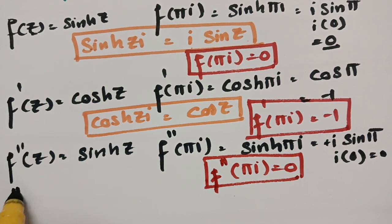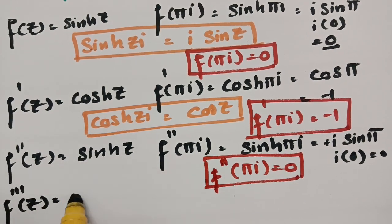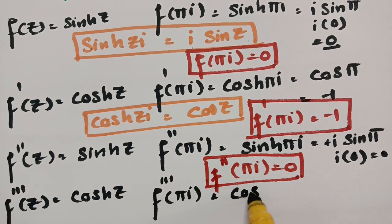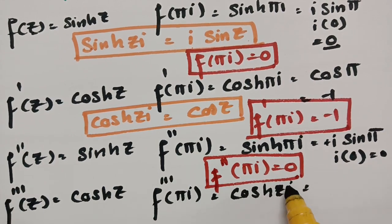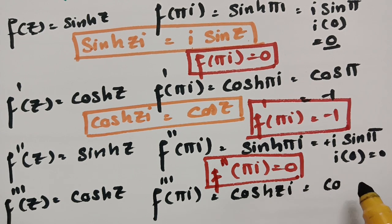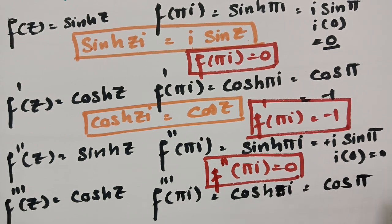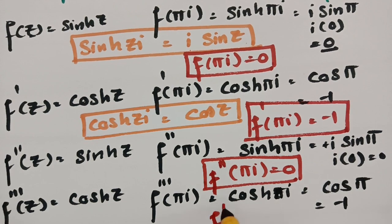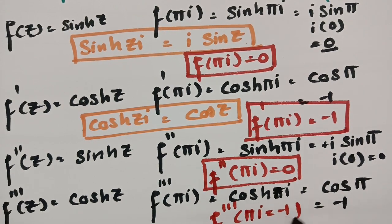For the third derivative, f'''(z) = cosh(z), so f'''(πi) = cosh(πi). Again applying cosh(iz) = cos(z), we get cos(π) = -1. Therefore f'''(πi) = -1.